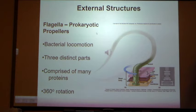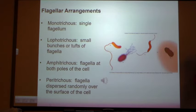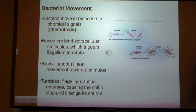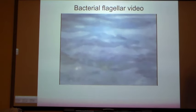Let's take a look at the bacterial flagellum. A lot of bacteria can swim. They do so with a simple filament sticking outside that just rotates — a 360-degree spin. Some bacteria may have one flagellum (monotrichous), some have a bunch (lophotrichous), some have one on each end (amphitrichous), and some have flagella all over (peritrichous).